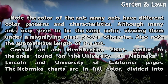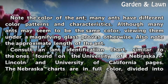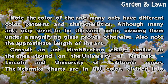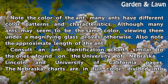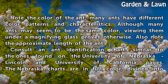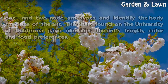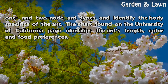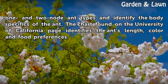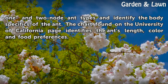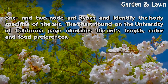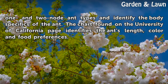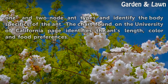Consult an ant identification chart, similar to the ones found on the University of Nebraska-Lincoln and University of California pages. The Nebraska charts are in full color, divided into one- and two-node ant types, and identify the body specifics of the ant. The chart found on the University of California page identifies the ant's length, color, and food preferences.